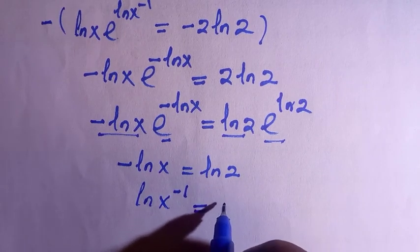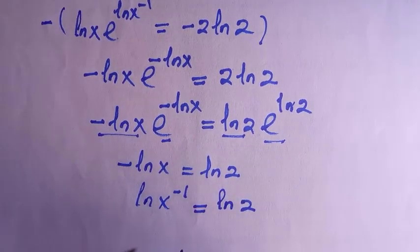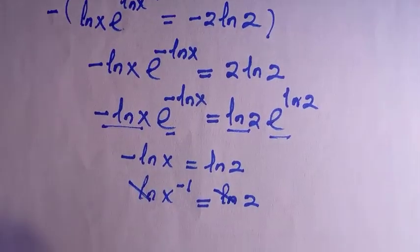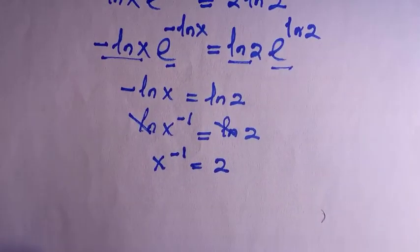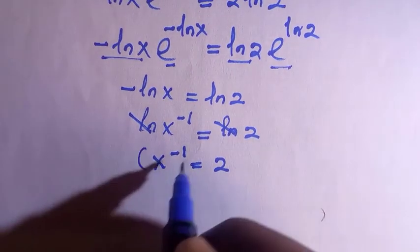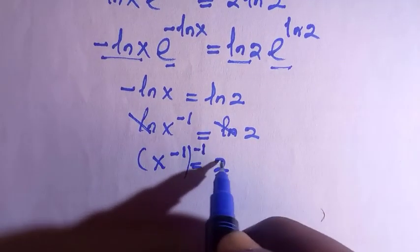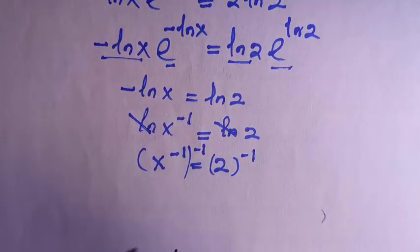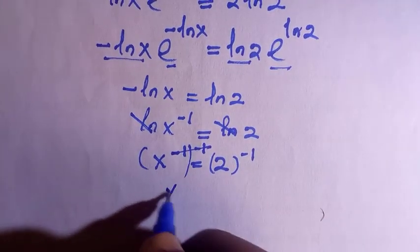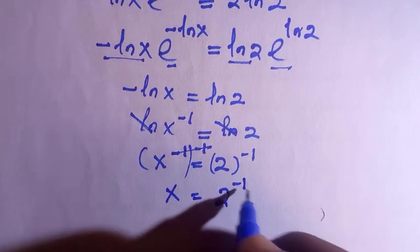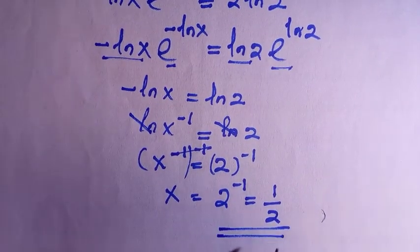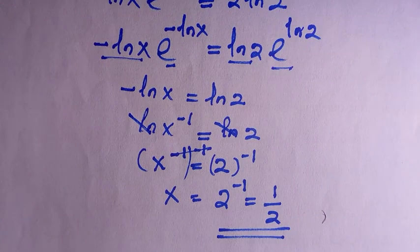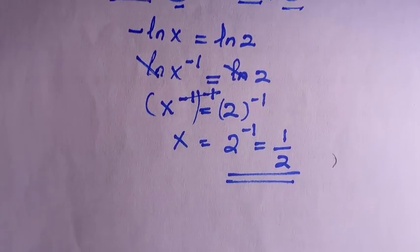By comparing negative ln x with ln 2, taking the negative up gives x to the power of negative 1 equals 2. Since ln cancels when you introduce exponentials, we get x to the minus 1 equals 2. Taking the inverse of both sides, x equals 2 to the power of minus 1, which is 1 divided by 2. This satisfies the equation above — this is the first method.